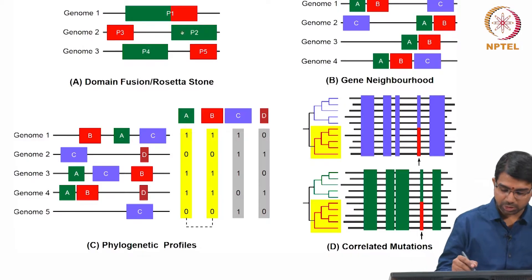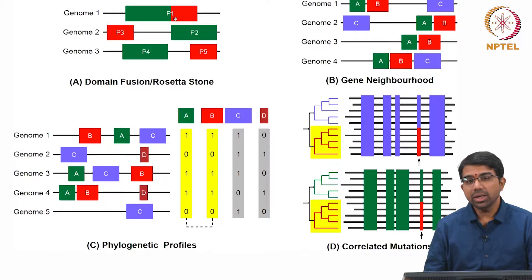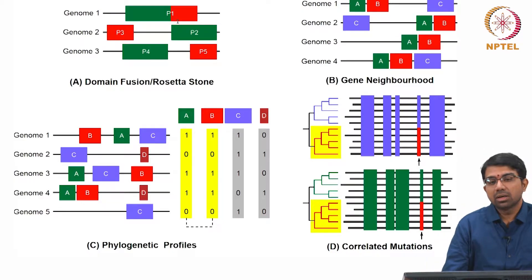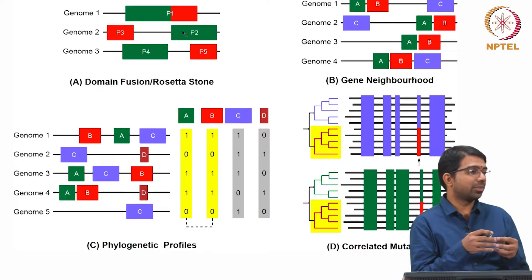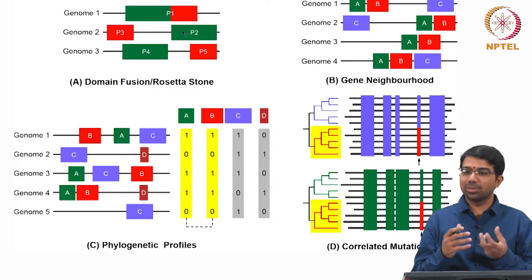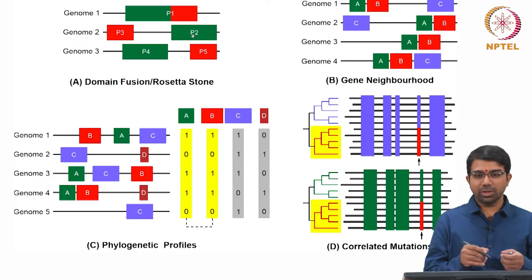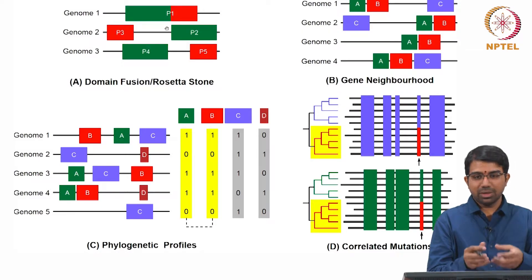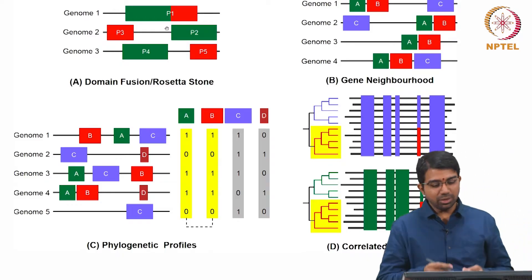This is Rosetta Stone, wherein you have two polypeptides present separately in many organisms that can be fused in another organism. Why? One argument is that in a simple organism these proteins are likely to be close to one another since the volume is very small, but in a larger organism the cell volumes are so large that if you want P2 and P3 to interact, the probability becomes very low. So if you want them to interact, might as well stick them together — the two domains are fused, making it easy to build on those interactions.